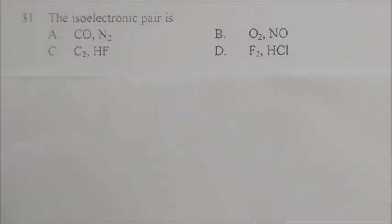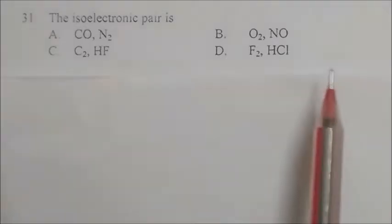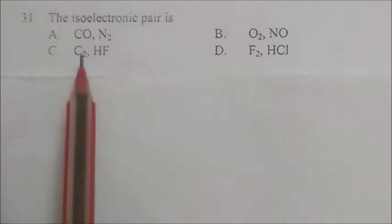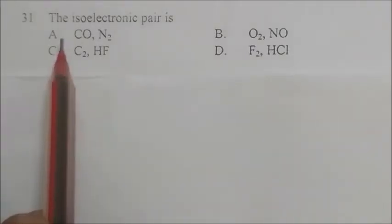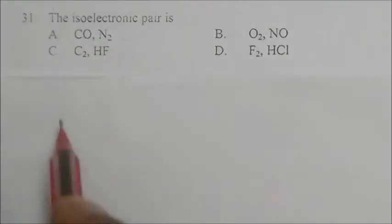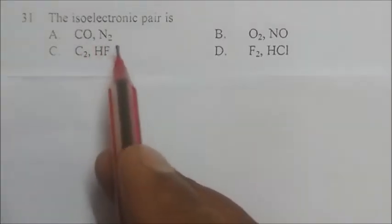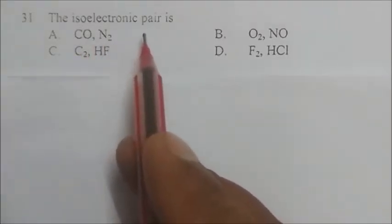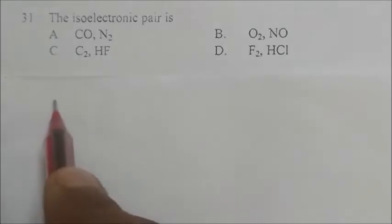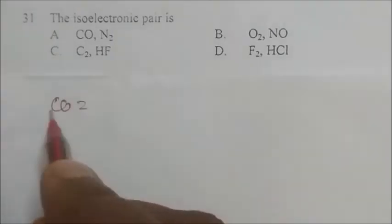Hello friends, in this session we are solving the questions of KVPY paper from 2014. The first question asks which is the isoelectronic pair. Isoelectronic pair means compounds or species having the same number of electrons.